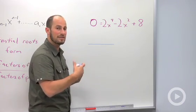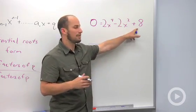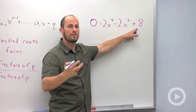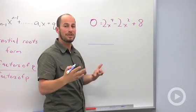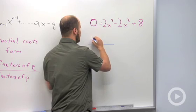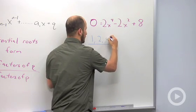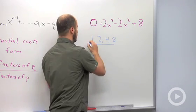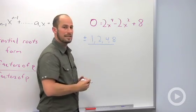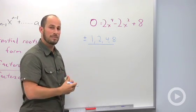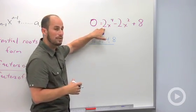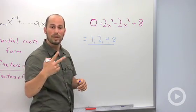How I write this out is I just draw a giant fraction line, then think about all the factors of the last term, factors of q: 1, 2, 4, and 8. That's the only thing that goes into 8. So this is going to be 1, 2, 4, and 8, plus and minus, over factors of the first term. In this case, our first term is just 2, so the only factors we have are 1 and 2.